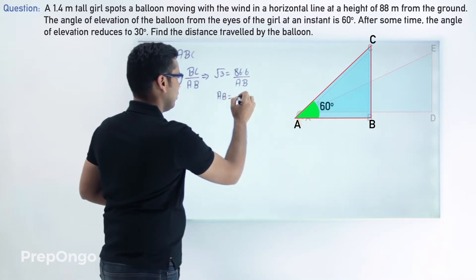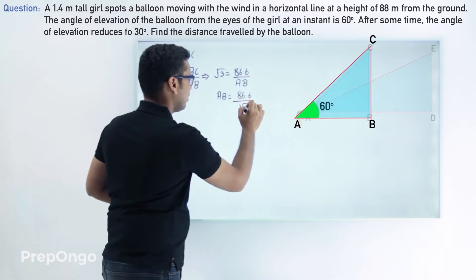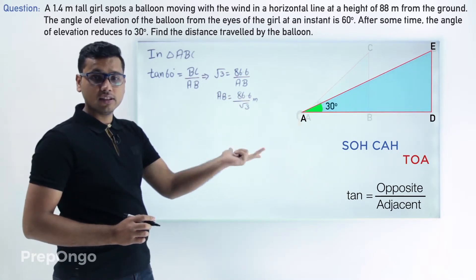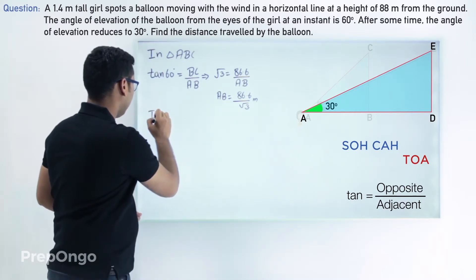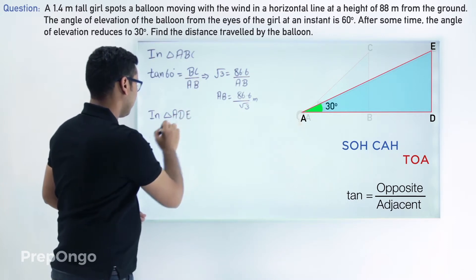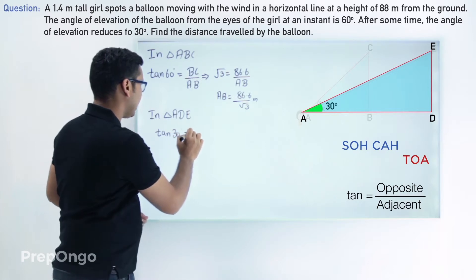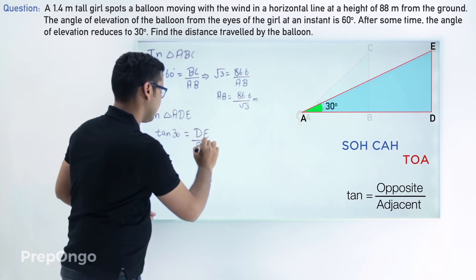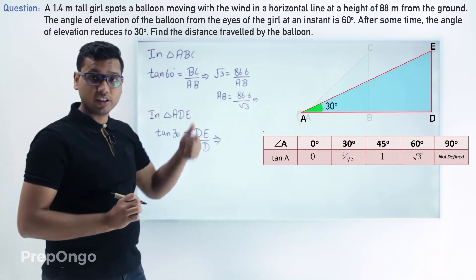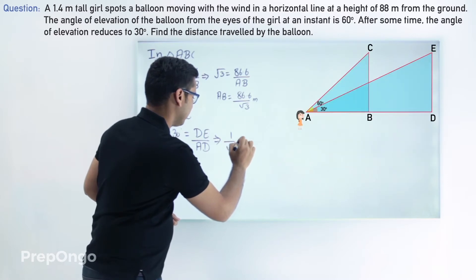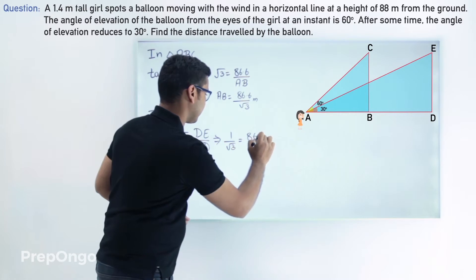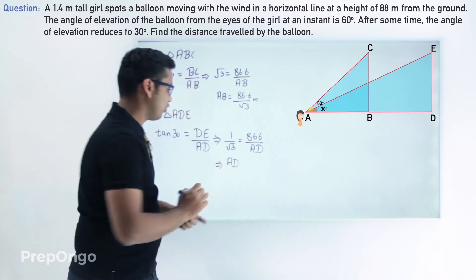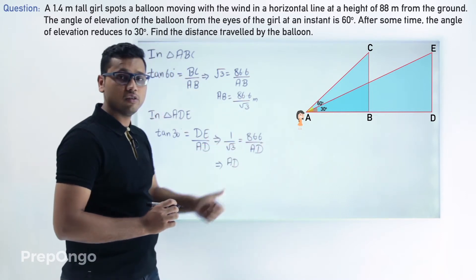Similarly we apply TOA in triangle ADE to find length AD. In triangle ADE, tan of 30 degrees equals DE upon AD. Putting in the value of tan 30 from the table, 1 by root 3 equals 86.6 divided by AD. Cross multiplying, AD comes out to be 86.6 root 3 meters.